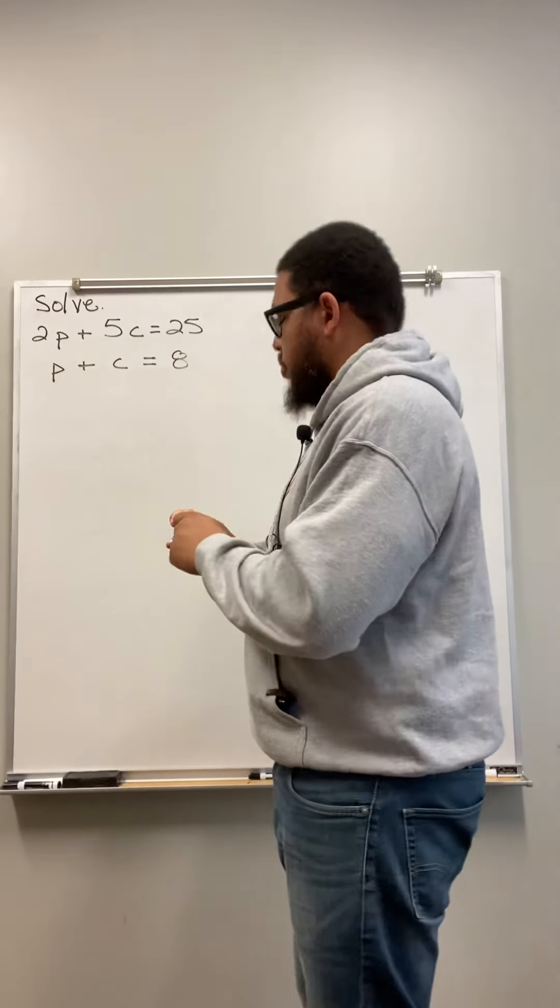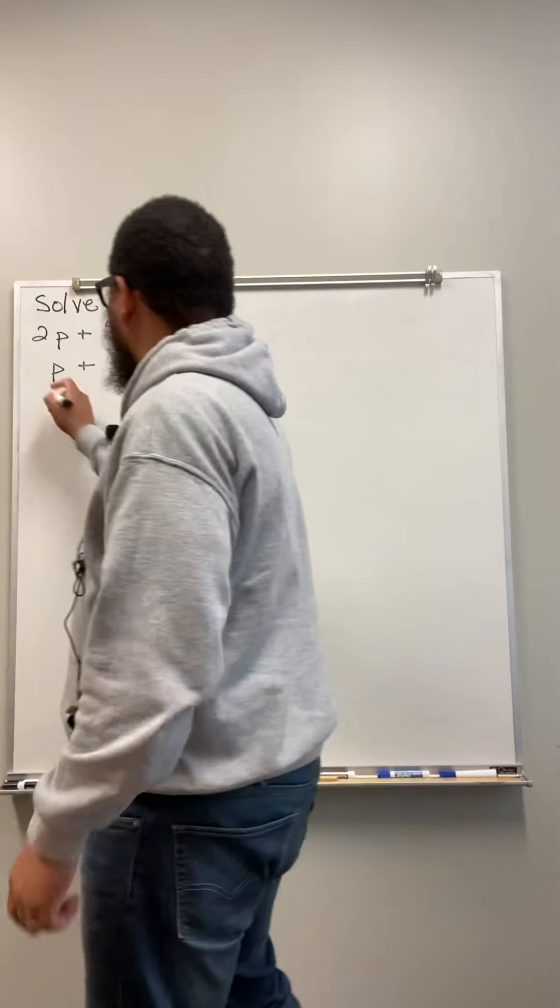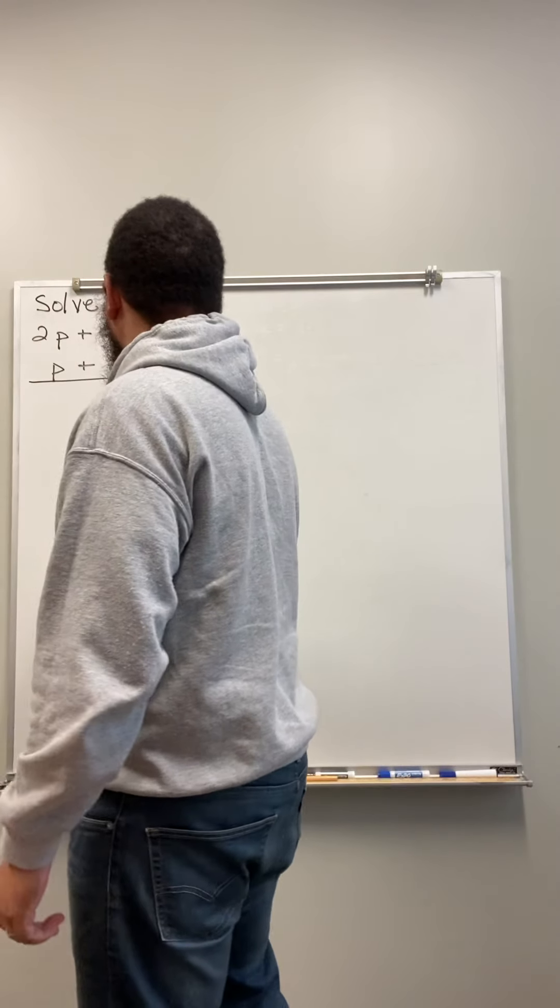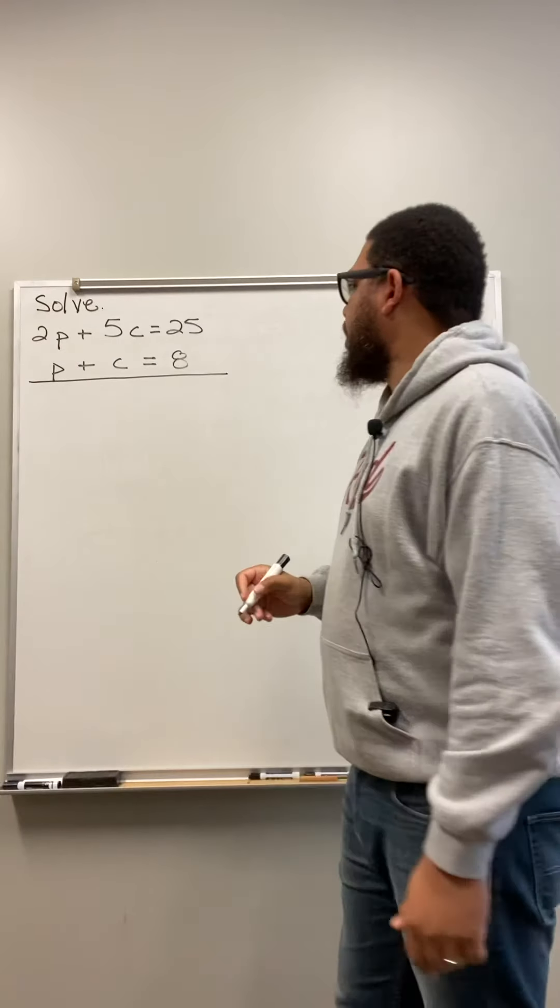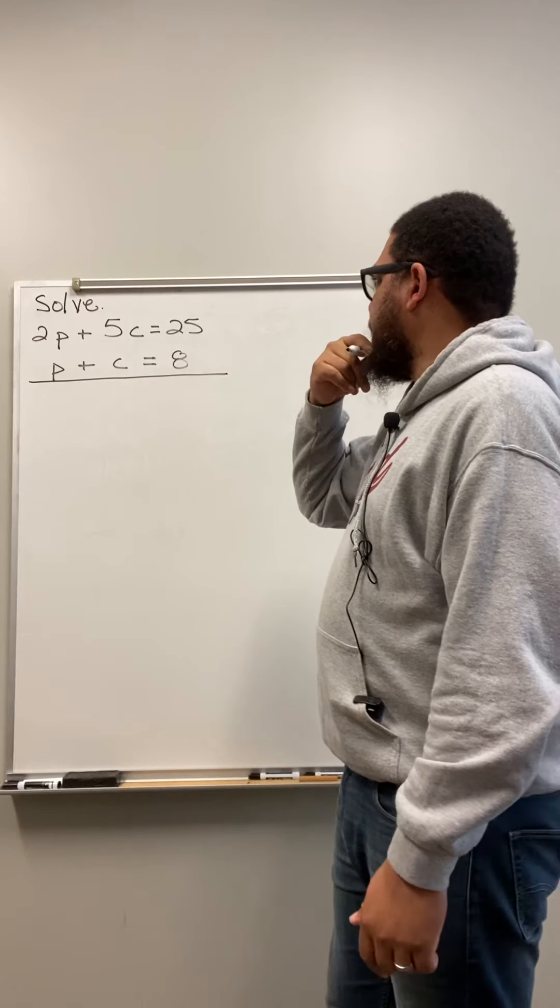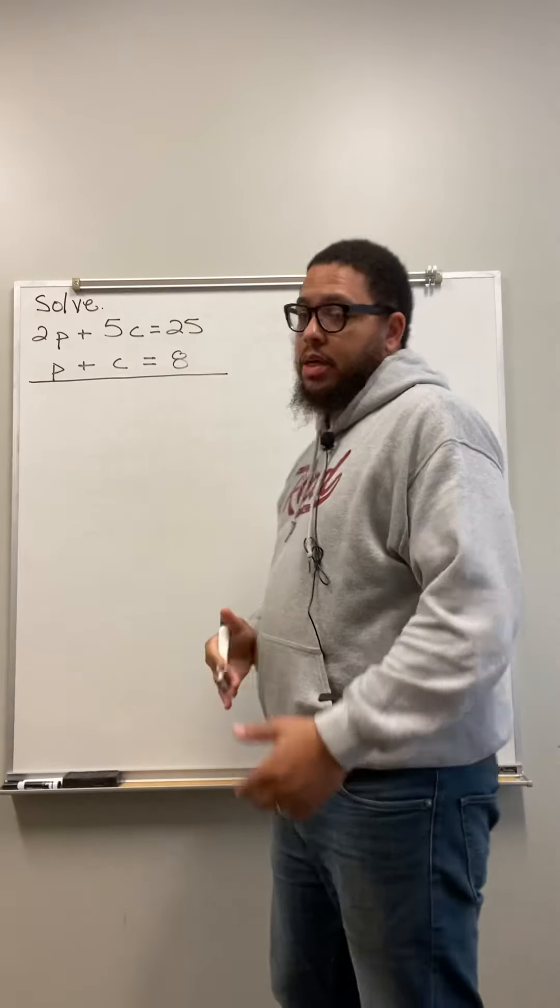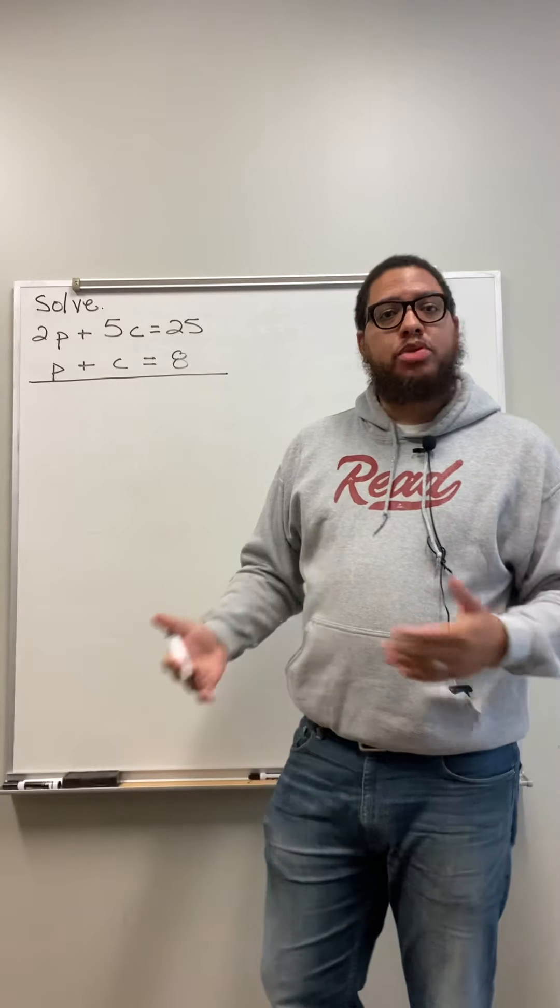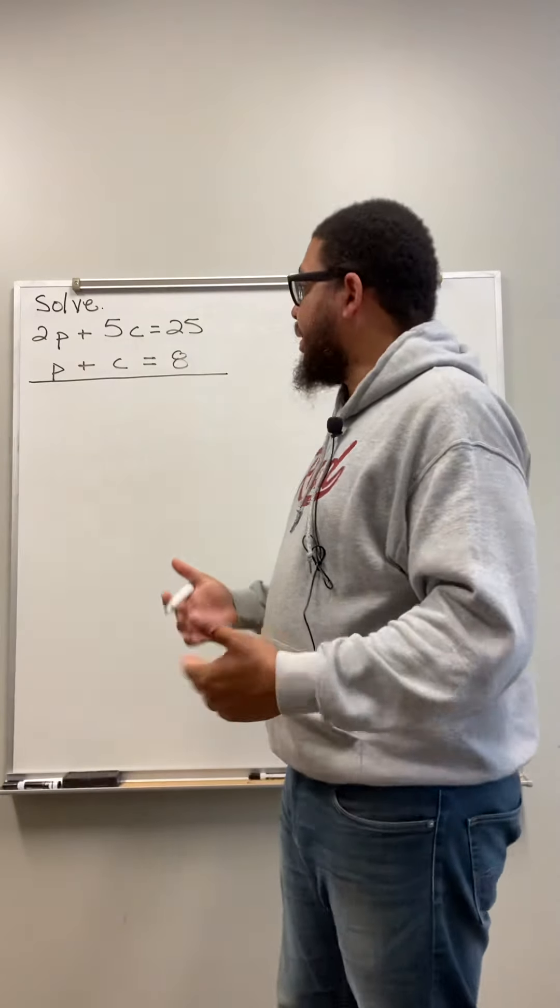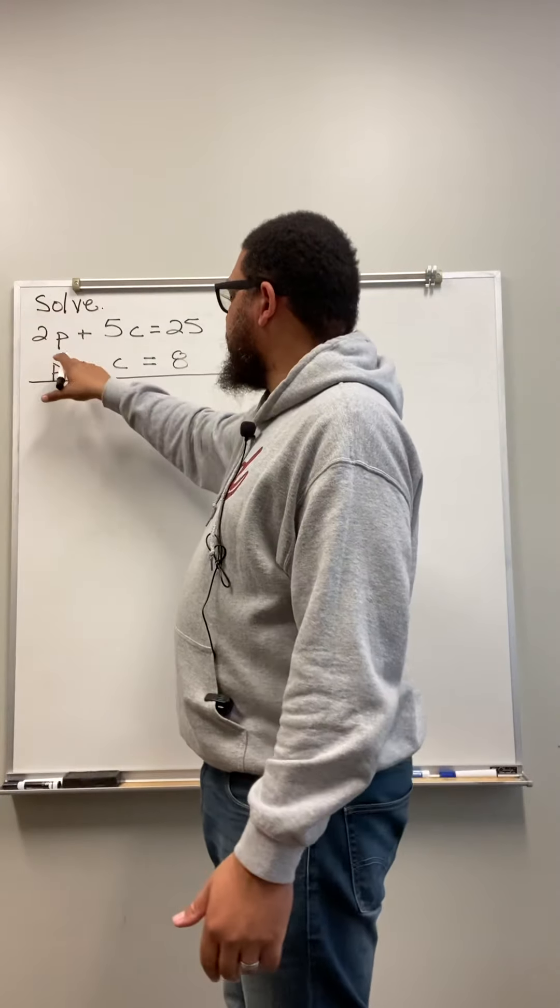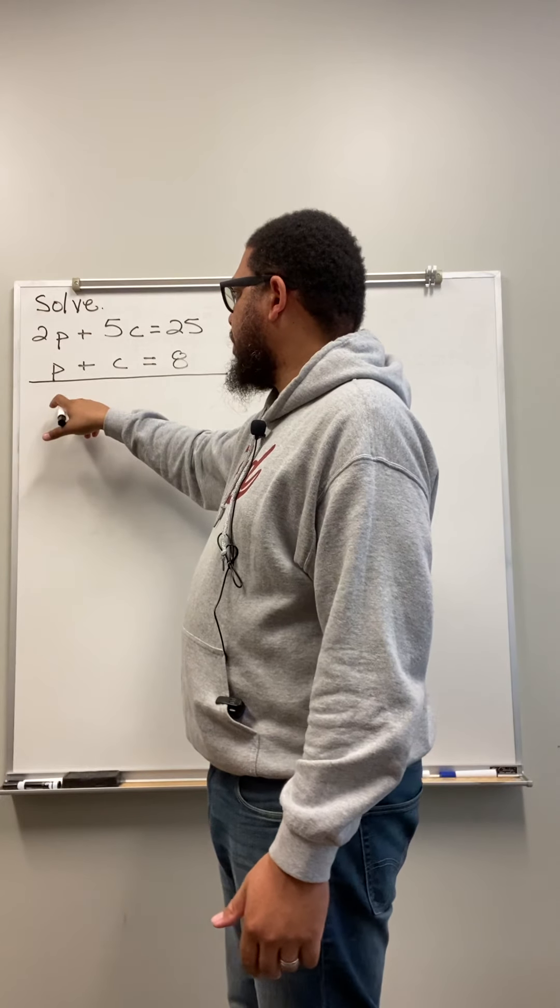So, first thing I want to do is I want to draw a horizontal bar underneath it there. And then I look at my two equations and I say, okay, well, if I add these two equations together, does either of the variables cancel out? And they don't, because if I add 2P plus P, that would give me 3P. So, the P's are still there.